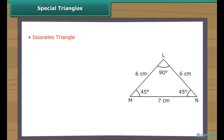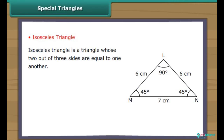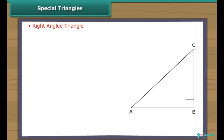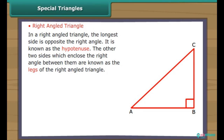An isosceles triangle is a triangle whose two out of three sides are equal. In triangle LMN, LM equals LN. In an isosceles triangle, angles opposite to the equal sides are also equal: angle LMN equals angle LNM. In a right-angled triangle, the longest side is opposite the right angle and is known as the hypotenuse. The two sides which enclose the right angle are known as the legs of the right-angled triangle.